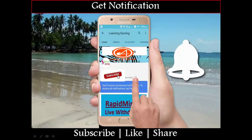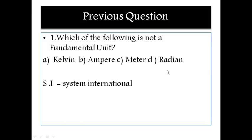This is a previous question asked in a recent government exam: Which of the following is not a fundamental unit? Option A: Kelvin. Option B: Ampere. Option C: Meter. Option D: Radium. If you know this answer, well and good — if not, don't worry, let us see the trick.